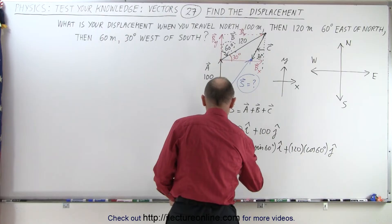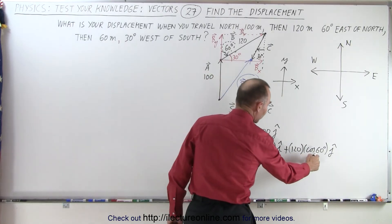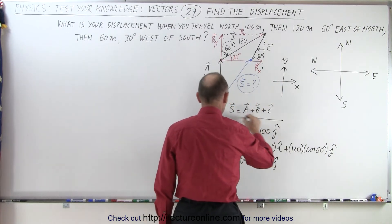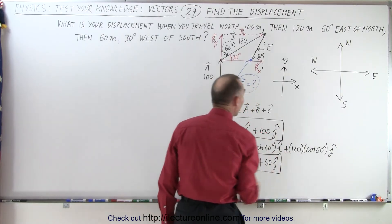So B is equal to 104 in the I direction, and the cosine of 60 is one half. That would be plus 60 in the J direction. So now we have our A vector, and we have our B vector. We still need our C vector.